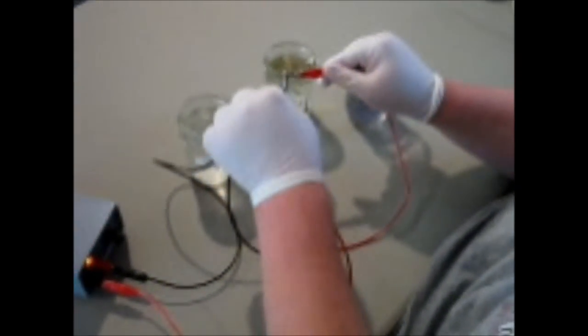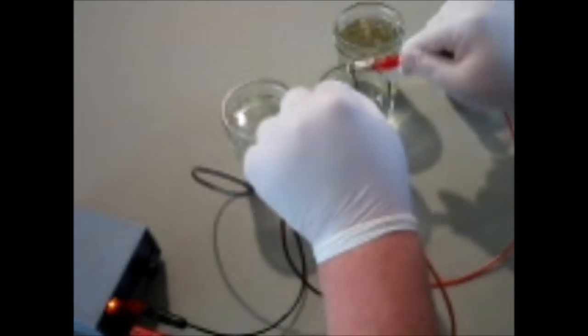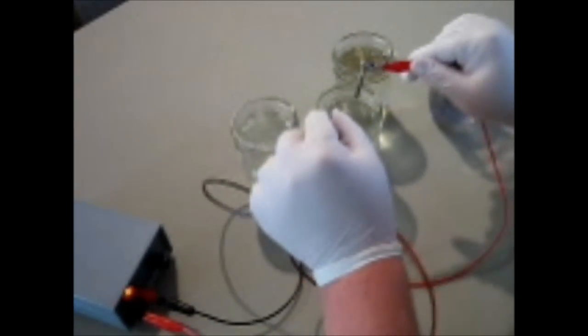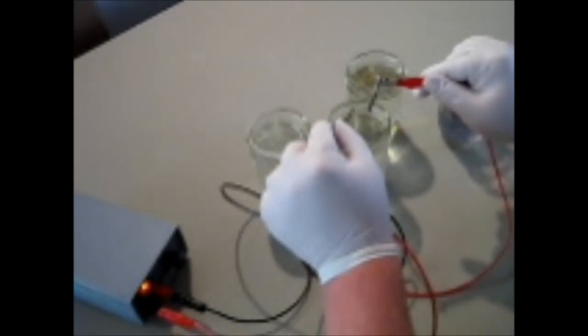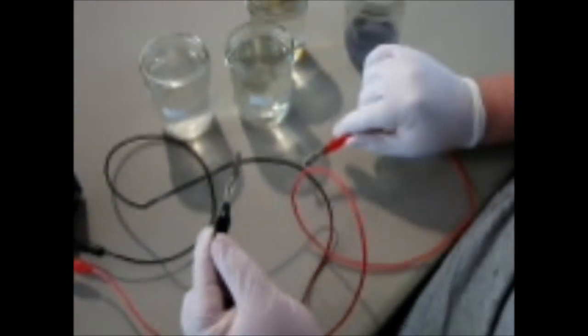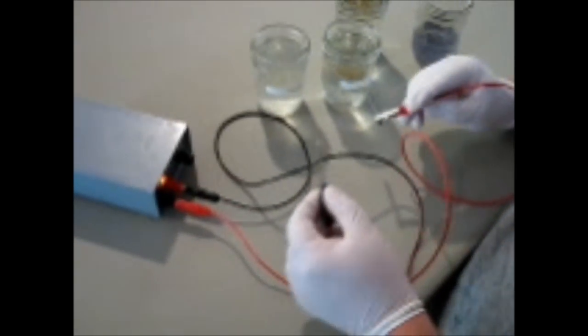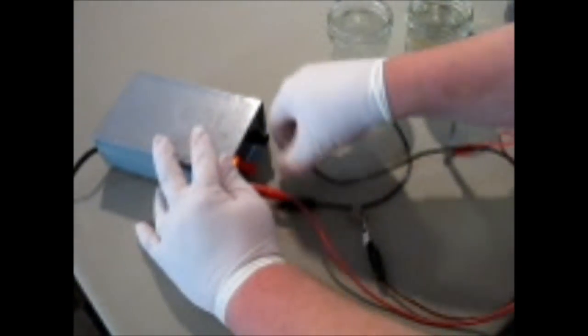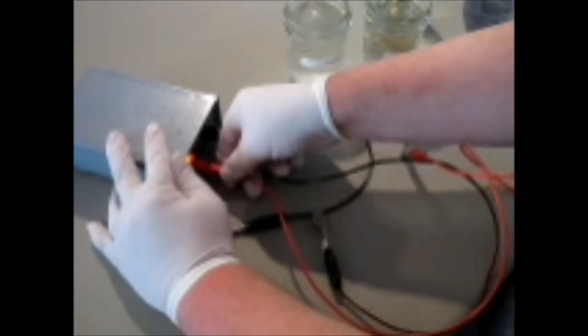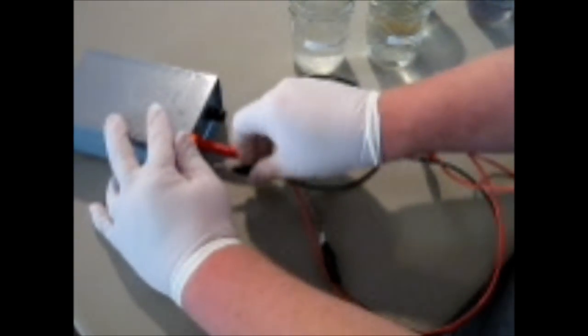Then what we're going to do is rinse it off with water. We're going to do the same thing with our screw. It's very important to do that each time. Now after we rinse these off, we're going to switch our leads. We want to put the red in the red and the black in the black, or as it's supposed to go.